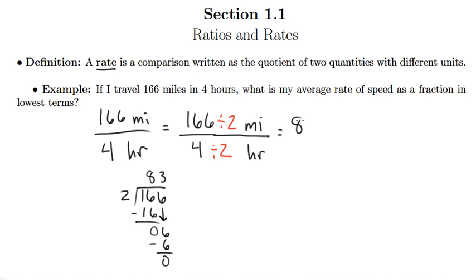So we get 83 miles on top. Of course, four divided by two is two. So we have two hours on bottom. And clearly, 83 and two share no common factors. So our rate, written as a fraction in lowest terms, is 83 miles for every two hours.